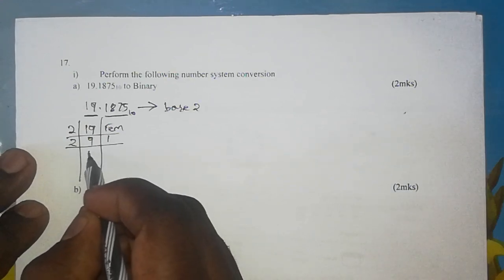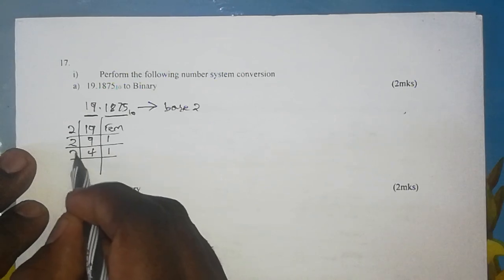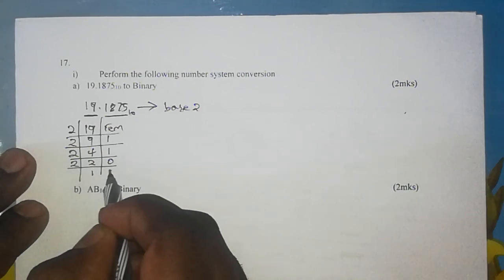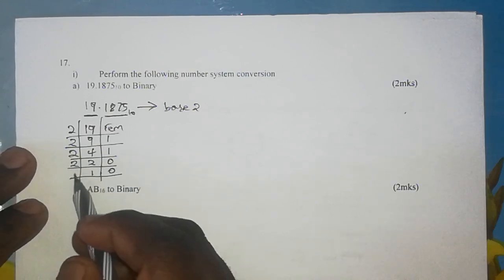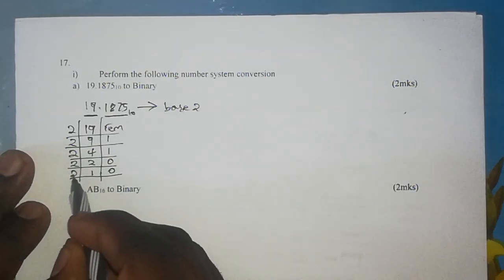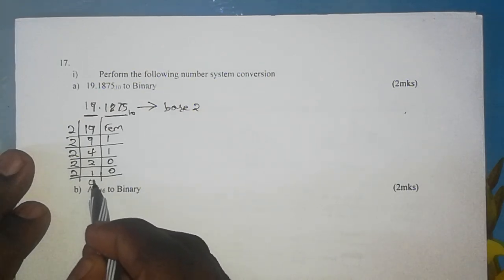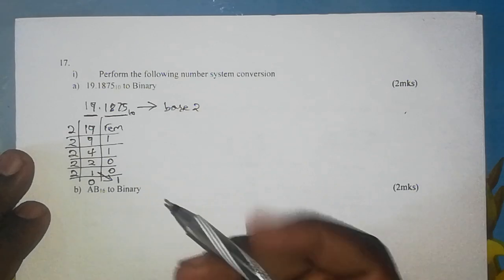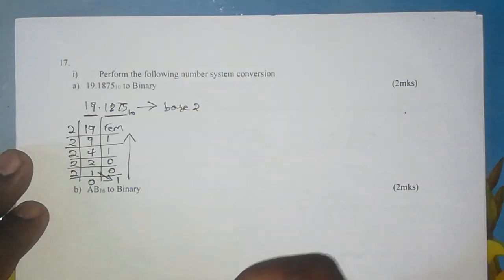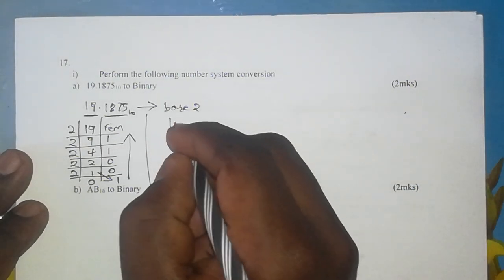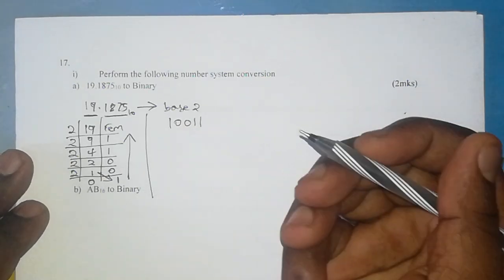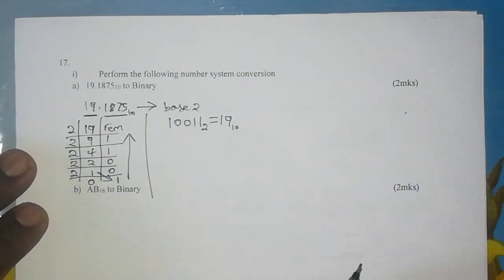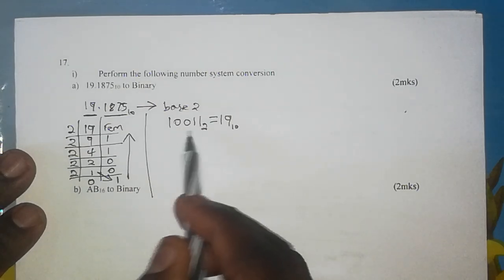2 into 9 is 4 with a remainder of 1. 2 into 4 is 2 with no remainder. 2 into 2 is 1 with no remainder. We keep dividing by 2 until the quotient is 0, so 2 into 1 — since 2 is larger than 1 — the quotient is 0 and the remainder is 1. We then read our remainders in reverse order, which gives us 10011. This is the binary equivalent of 19 base 10, and that is our first part of the answer.